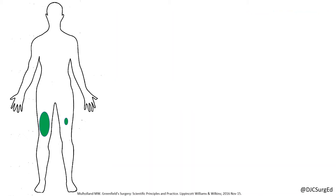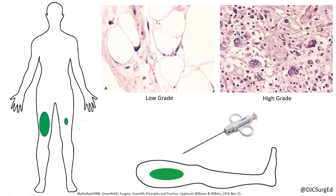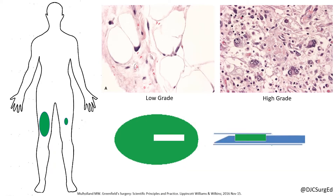Pretreatment biopsy is highly preferred for tissue diagnosis and grading. Tumor grade is the most important prognostic factor. Others being size greater than 5 cm, deep tumors, or fixed immobile tumors. A core needle biopsy should be obtained and placed along the future axis of resection. If the sample is inadequate, a longitudinal incisional or excisional biopsy can be performed depending on the size of the tumor.